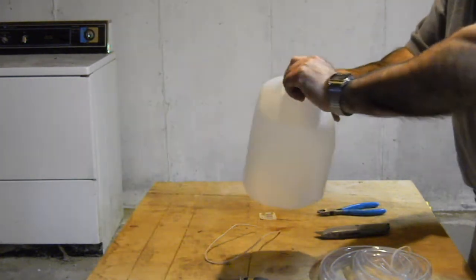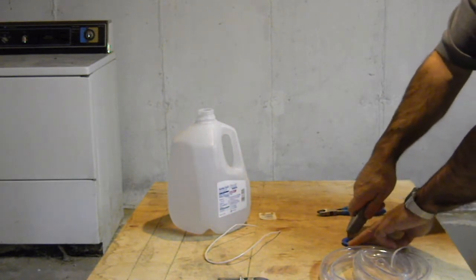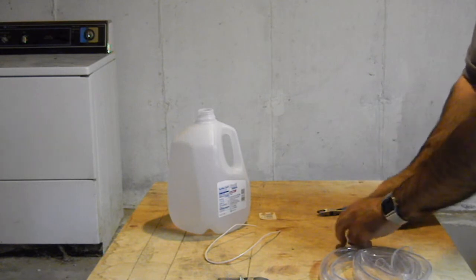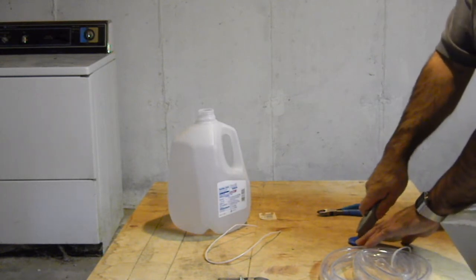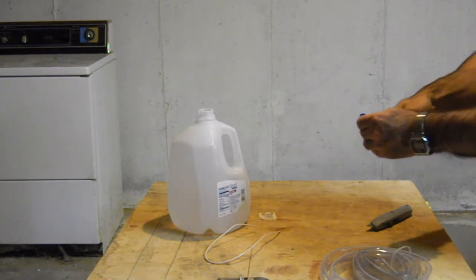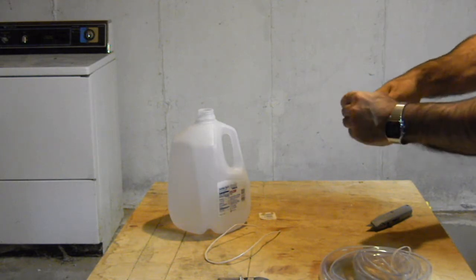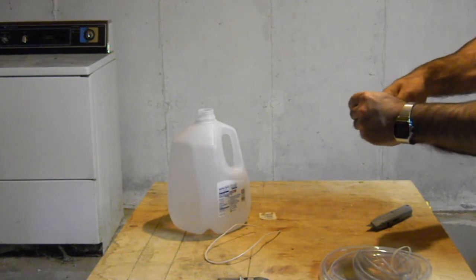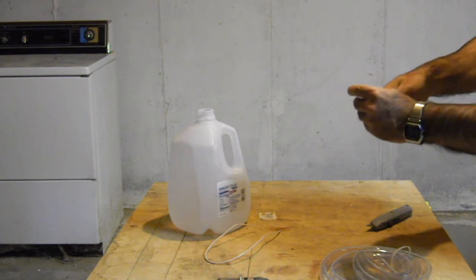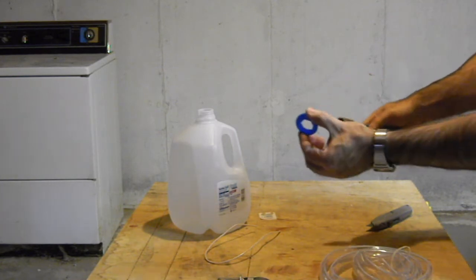The first item we need to do is to cut a hole in the top of the water jug. I just use my knife to open a piece here, and then I can use the wire cutters to cut the hole. Okay, we have a hole.